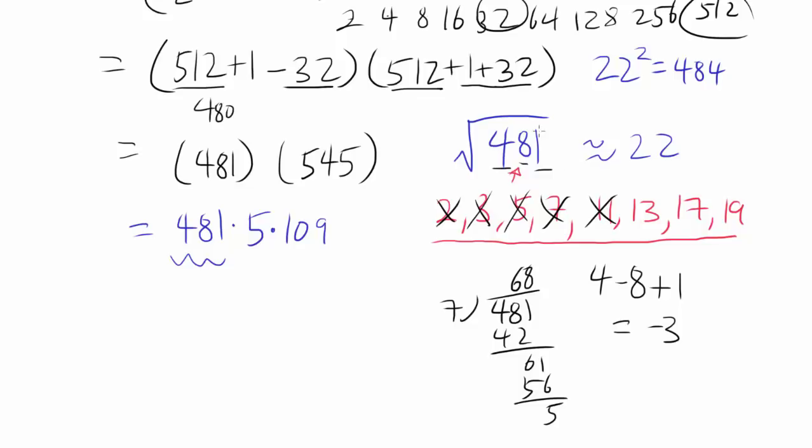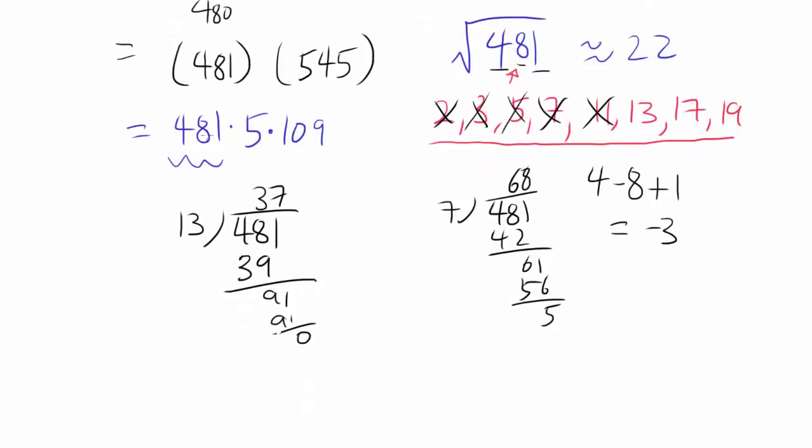Another way is to actually try dividing by 11. How about 13? 481 divided by 13. 13 goes into 48 three times, and you have 91 left. Hey, there you go. 13 indeed goes into our expression. So our 481, let's rewrite, let's go right here, is equal to 13 times 37.